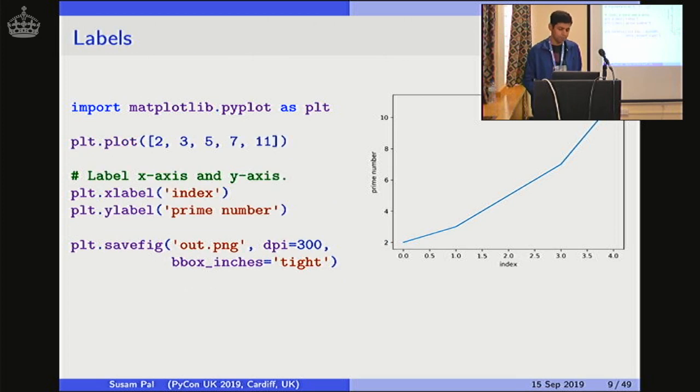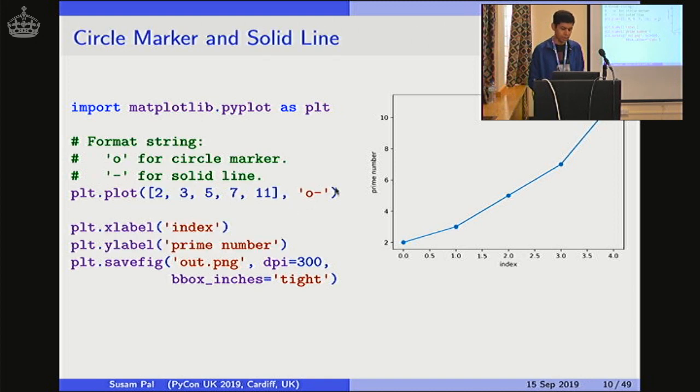So now I want to make each number that I have shown on this plot in a more prominent way by using circle markers. The way we do it is using this extra argument called the format string. This format string has two letters O and hyphen. The O stands for the circle markers. Now you see each number is visible quite prominently using the circle markers. The hyphen is for the solid line. The solid line was default anyway. But if you're going to override the default setting and try to customize it ourselves, we need to put this hyphen back if you want to see the solid line.